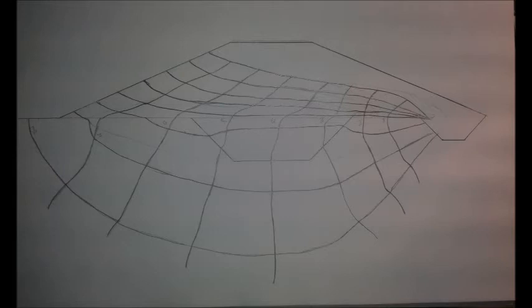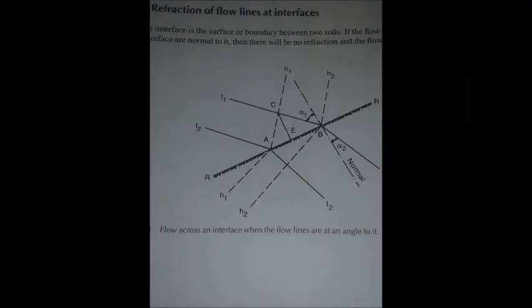From this, we were able to draw the flow nets underneath the dam. When drawing the flow nets underneath the dam, we had to account for the fact that the flow lines would be going from one permeability to another. When a flow line leaves a permeability that is higher and transfers into a lower permeability, there is refraction. There is also refraction when a flow line leaves a low permeability and travels into a high permeability.